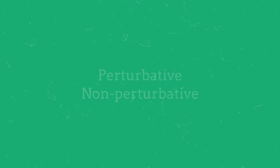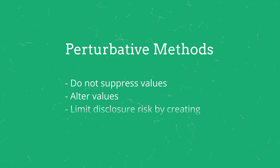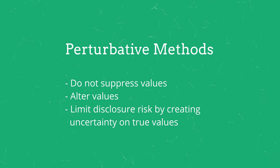There are a variety of techniques to reduce the disclosure risk in data. These are referred to as either perturbative or non-perturbative methods. Perturbative methods do not suppress values in the data set, but instead alter these values to limit disclosure risk by creating uncertainty around the true values.